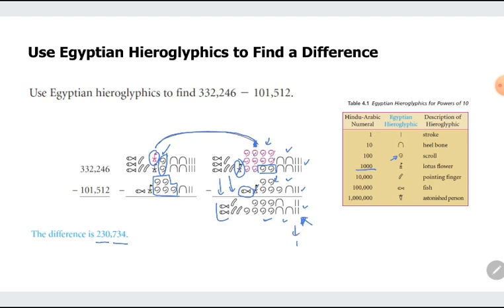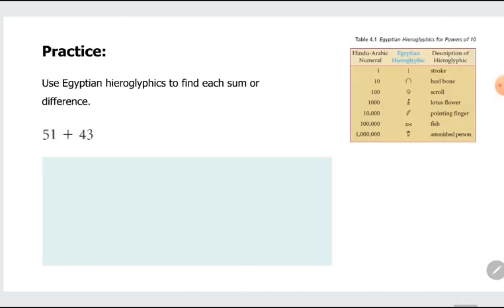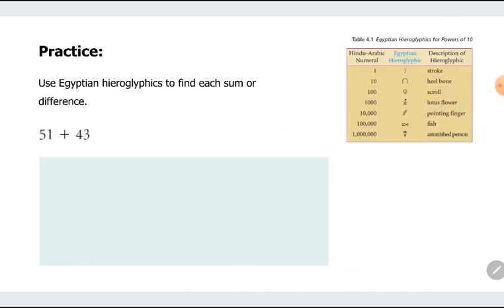This one is 4. This one is 30. This one is 700 plus pointing fingers. That's 10,000. So 30,000. And then 2 fishes. That's 200,000. That's why you have this digit.